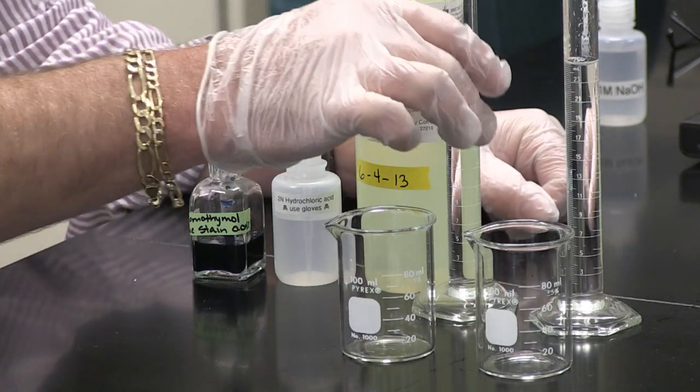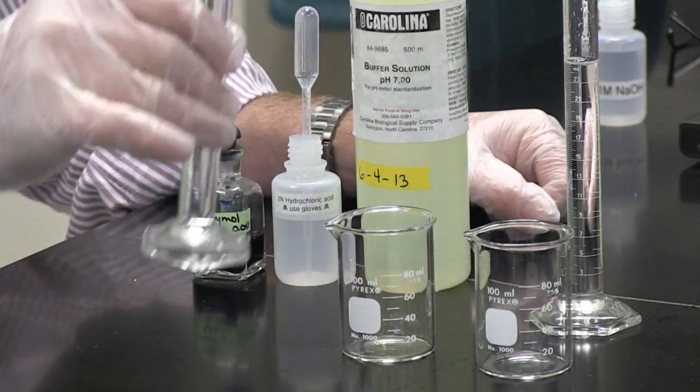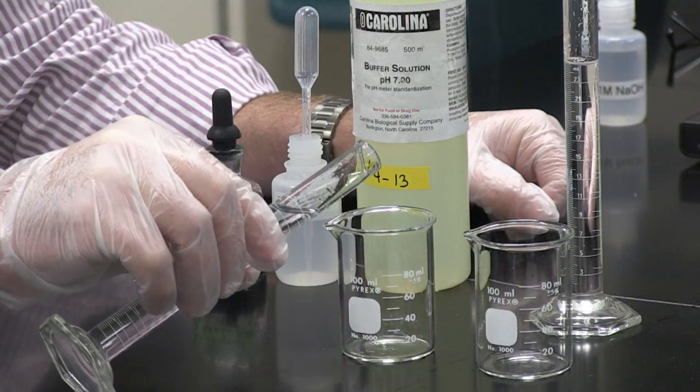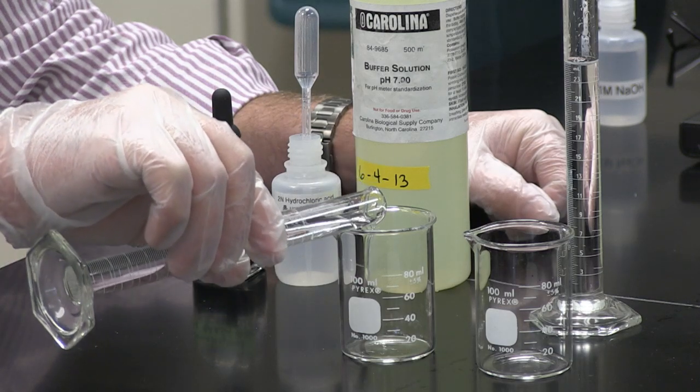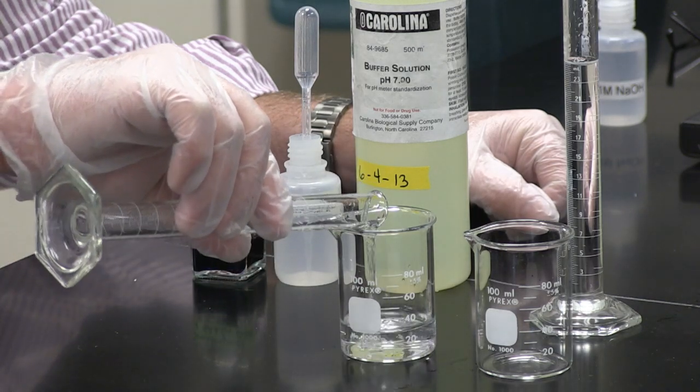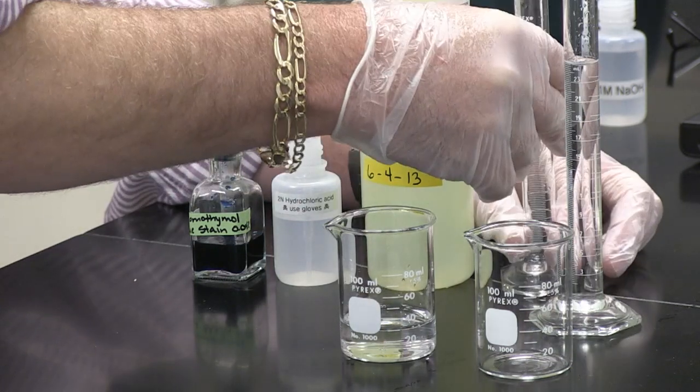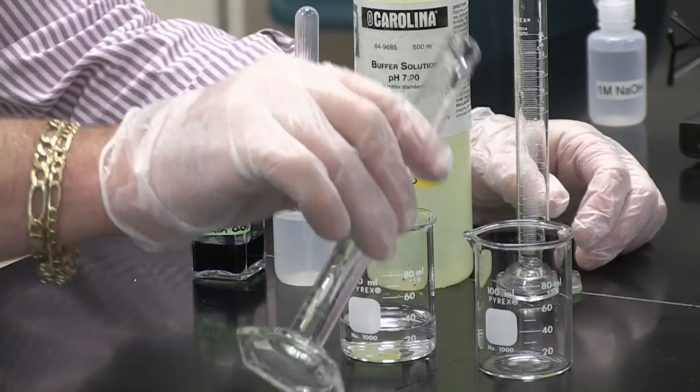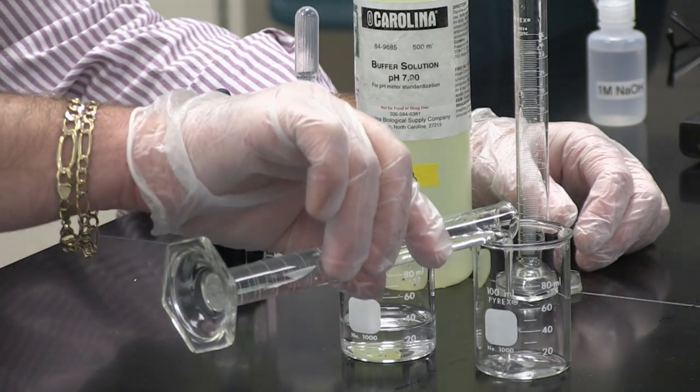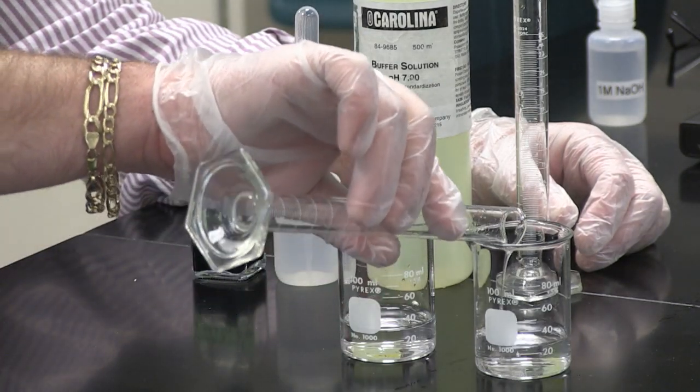So to start the demonstration, I am going to pour 25 milliliters of pH 7 buffer solution into a beaker and then I am going to pour 25 milliliters of water into a beaker.